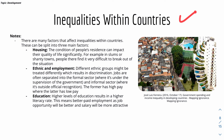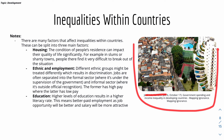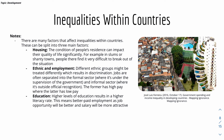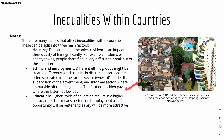Then we look at inequalities within countries. Many factors affect inequalities within countries. For example, housing — the conditions of people's residences can significantly impact their quality of life. A famous photo demonstrates this inequality, showing a good residential area alongside slums or low-income housing. We also have ethnic and employment factors, where different ethnic groups might be treated differently, resulting in discrimination, affecting their employment and pay. Education is another factor — high levels of education result in a higher literacy rate, meaning better-paid employment and higher salaries.